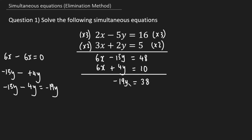Step three is to find y by rearranging — this is why you need to know how to solve linear equations. To rearrange for y I have to get rid of this negative 19, which is attached to y through multiplication, so I'm going to divide both sides of the equation by negative 19. This gives us y equals 38 divided by 19, which is 2, and a positive divided by a negative is a negative, so y equals negative 2.